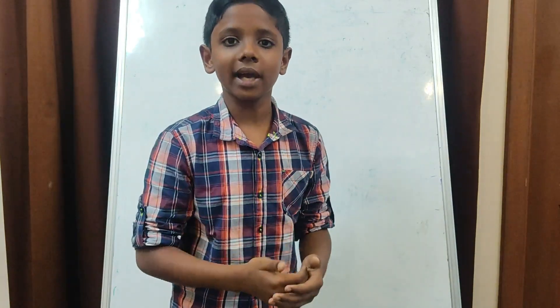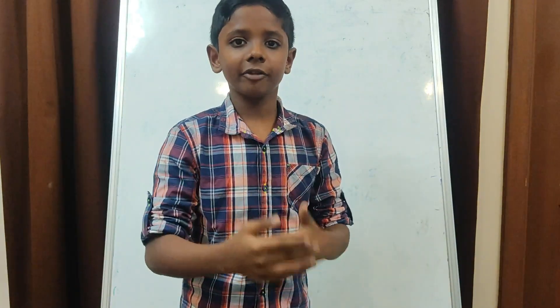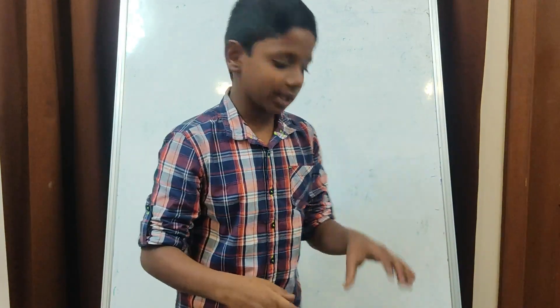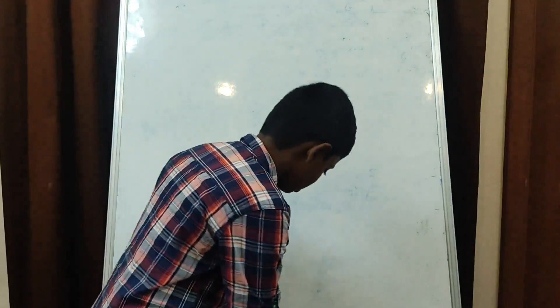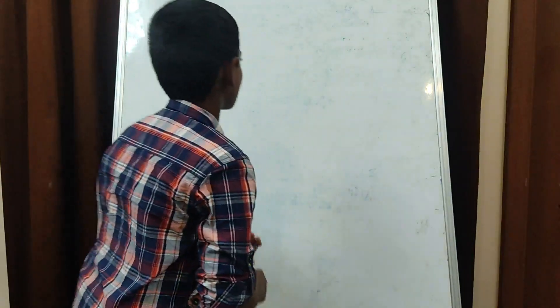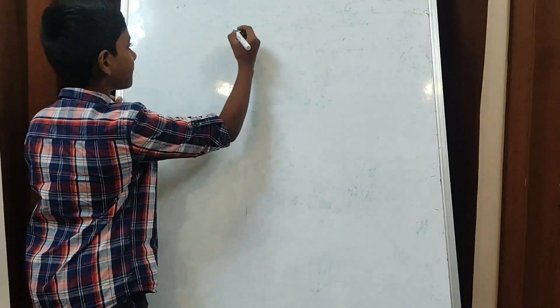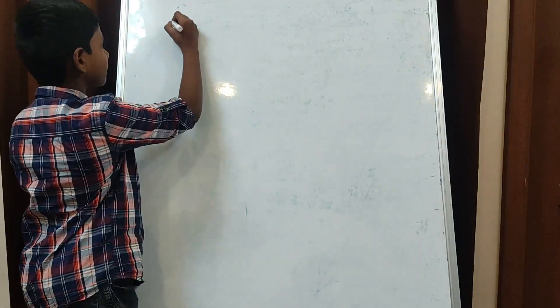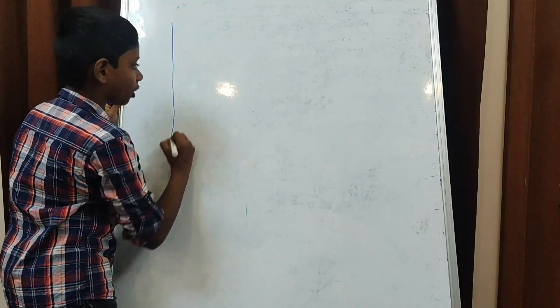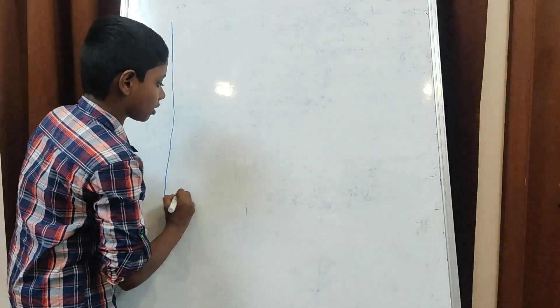Now let's see the format for message writing. Message writing has six main points. Let's see what they are and where they should all be placed. On top, message writing should always be inside a box.